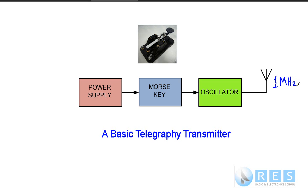The way we say no information in radio is we say no modulation. So if we just had this oscillator, it would just transmit a radio frequency sine wave on 1 MHz. And if someone received that, they wouldn't hear any sounds. They wouldn't hear any information.